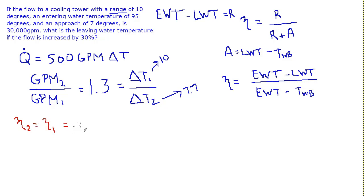We'll say efficiency 2 equals efficiency 1. And what does efficiency 1 equal? We know entering is 95. We know the range is 10. So we know the leaving is 85 in the original case. And we know the approach is 7. We knew the leaving was 85, so the wet bulb must have been 78. So that gives us the ability to plug it in at this level or plug it in at this level. The range is 10. And the range plus approach is 10 plus 7, which is 17. So the efficiency is 0.588.